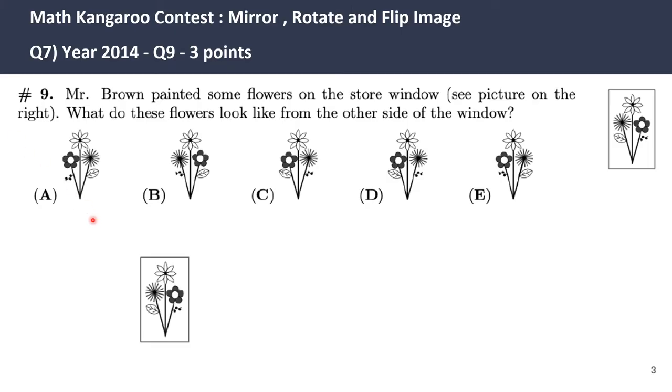Let's look at this question from 2014. This is for three points. Mr. Brown painted some flowers on the store window. See picture on the right. What do these flowers look like from the other side of the window? The hidden message here is the person is trying to look at the flower from the other side of the window, which means it's a reverse image. Let's compare how the reverse image looks like.